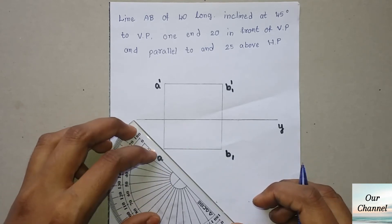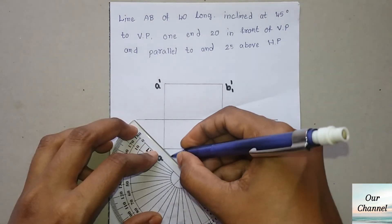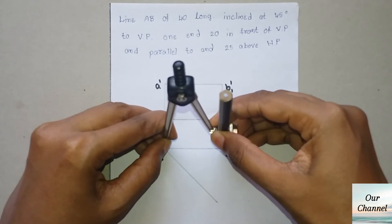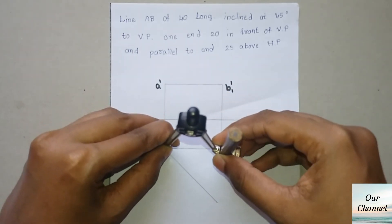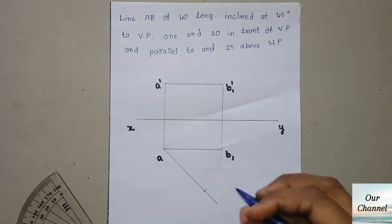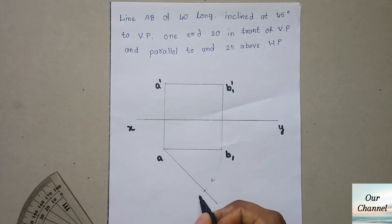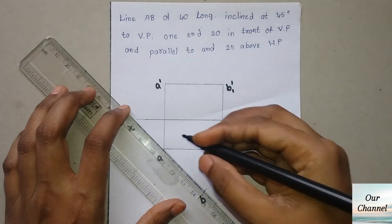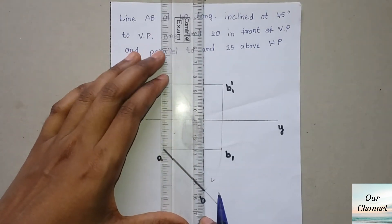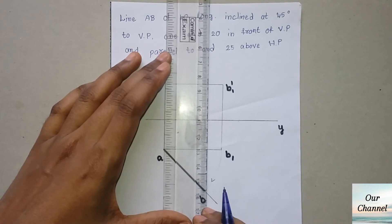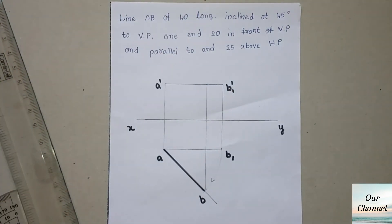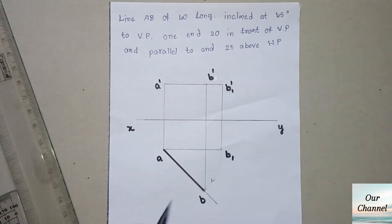Now draw a line inclined at 45 degrees to VP from point a. Put the 45-degree mark and draw the line, as we did in the previous case. Take a compass and draw an arc intersecting the line. Draw a perpendicular line from B which touches the line a dash to b1 dash — this intersection is b dash. So a dash to b dash is the true length of the line.